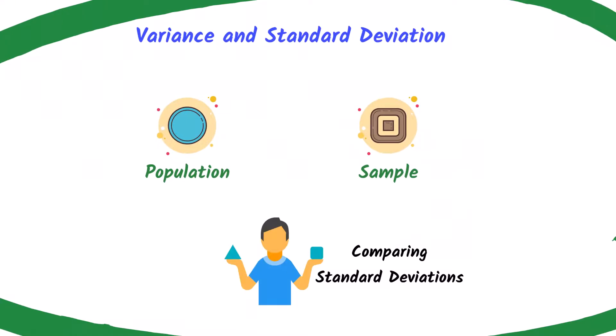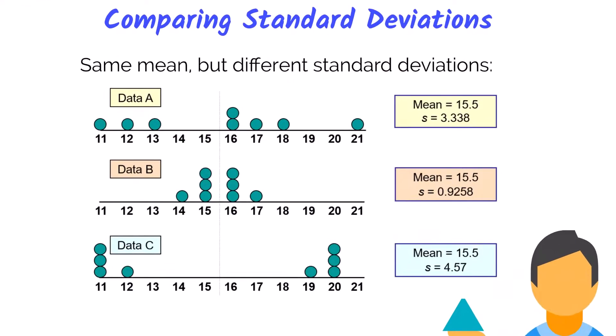So let's compare standard deviations across different data sets. We can see here we've got three different data sets that have all the same mean of 15.5. However, the sample standard deviations, or lowercase s, are different.